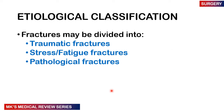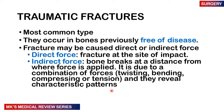The etiological classification is based on what caused the fracture. We can divide it into three main types: traumatic fractures, which can result from direct or indirect force; stress or fatigue fractures; and pathological fractures. Traumatic fractures are the most common type, occurring in bones that are free of disease. With direct force, the fracture happens at the site of impact; with indirect force, the bone breaks at a distance from where the force was applied.